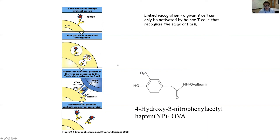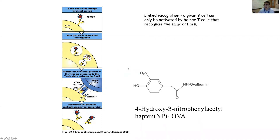A classical example is NP-OVA, a vaccine used to study B cell responses. NP is an NP-hapten conjugated to ovalbumin, a protein from eggs. T cells can't bind NP because it's not a protein structure, but T cell dependency still exists because the T cell binds ovalbumin while the B cell binds NP. The B cell internalizes based on NP, degrades the whole protein, puts portions of OVA on MHC class II, and the T cell recognizes this — allowing antibodies to NP even though T cells never see NP as an antigen.